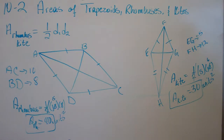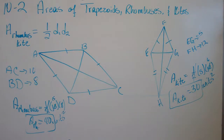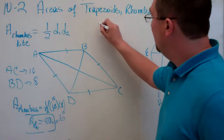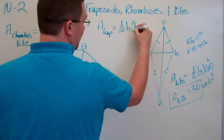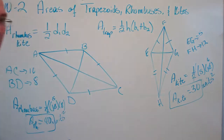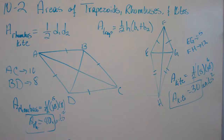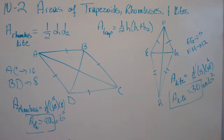That's pretty much it for areas of trapezoids, rhombuses, and kites. Make sure you have the two formulas written down. For the rhombus and kite, it's one-half diagonal 1 times diagonal 2. For a trapezoid, it's simply one-half the height times the sum of the two bases. Make sure you know how to find the height of a trapezoid — it's simply the perpendicular distance between your two bases — and make sure you know what the diagonals of rhombuses and kites are. You can watch this video as many times as you need to. Make sure you're ready to work some problems when you come to class tomorrow.